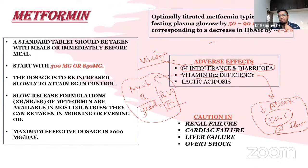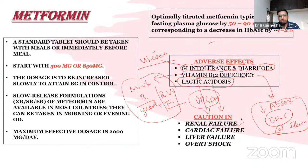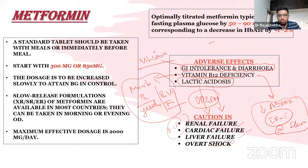Ideally, monitor B12 levels and supplement when they fall below the recommended threshold. Lactic acidosis is not seen at standard clinical doses in stable patients. However, in organ dysfunction — severe renal failure (altered metformin excretion), cardiac failure, liver failure, or overt shock — clinically used metformin doses can cause dangerous lactic acidosis. Do not give metformin in ICU patients or those with shock.